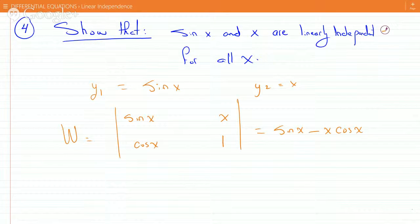Now, of course, if it is zero, it should be true for all values of x. So let's choose x to be pi over 3. Then this would evaluate into sine pi over 3 is root 3 over 2 minus pi over 3 times cosine pi over 3 is half.